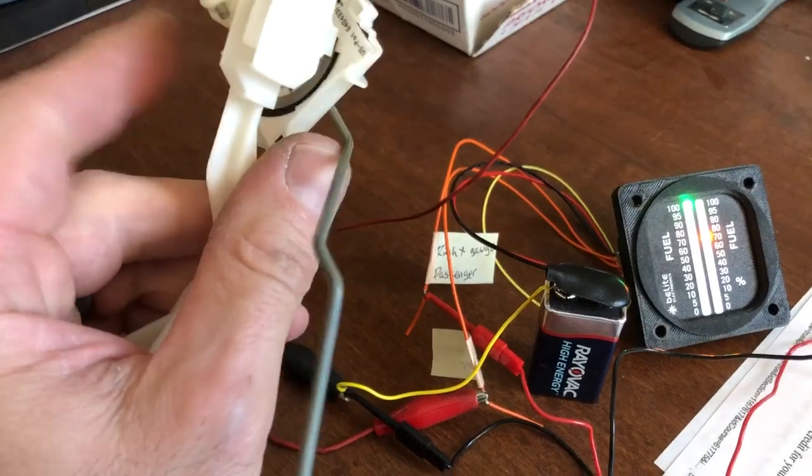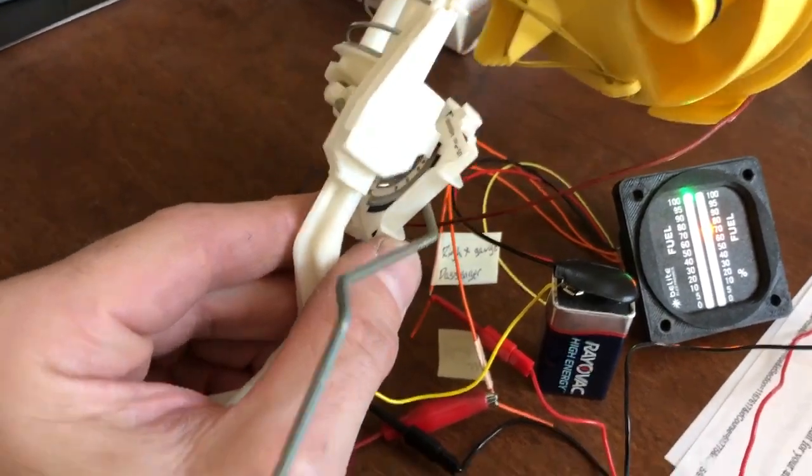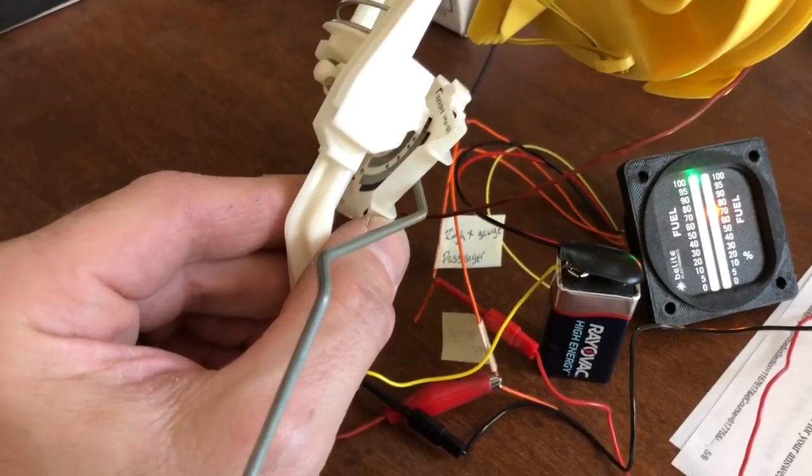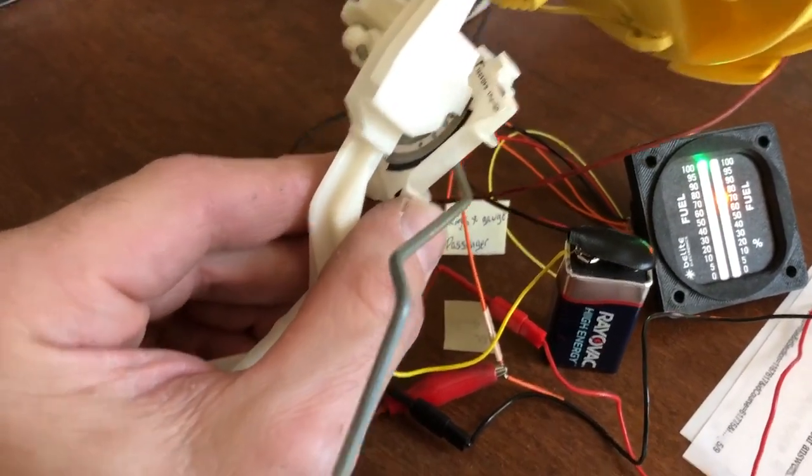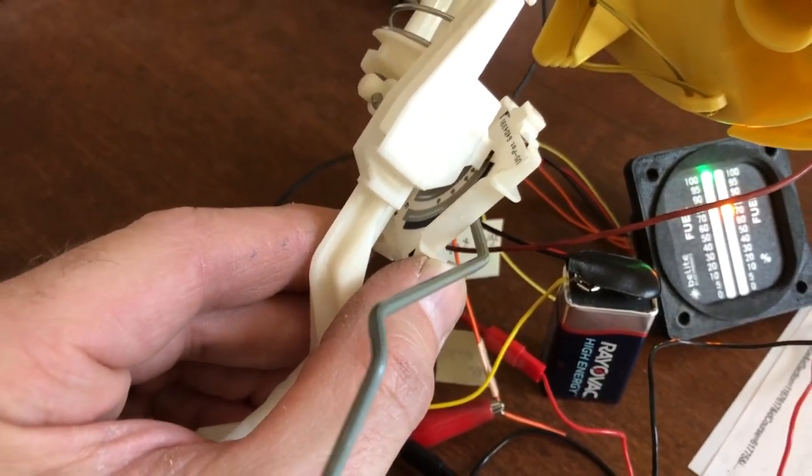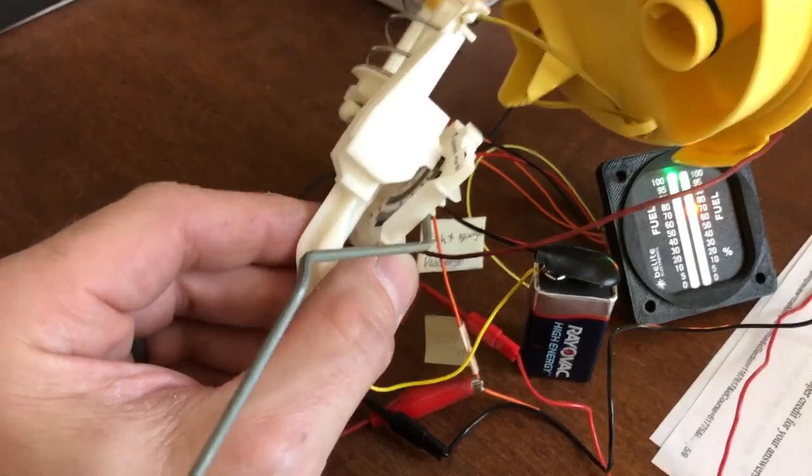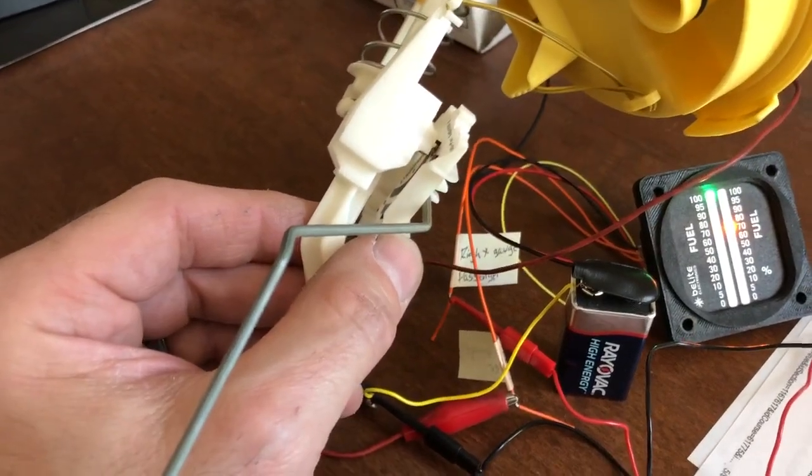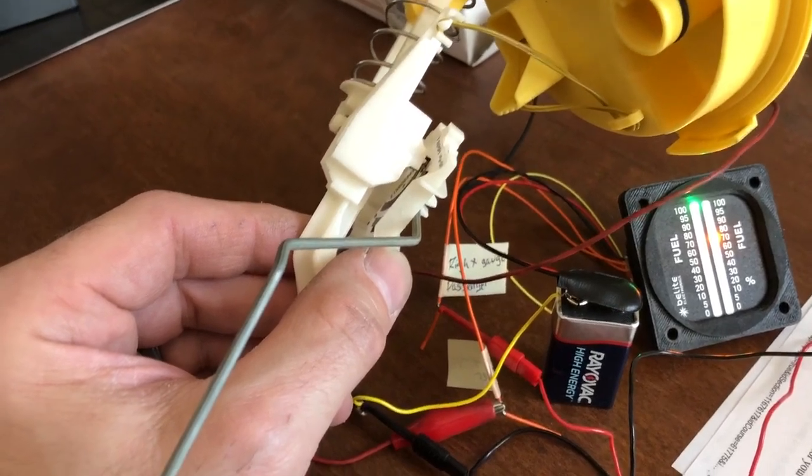The passenger lobe, its fuel sender actually has a reserve setting that is supposed to turn on the light when the fuel gets below a certain point and you can see right there on the resistor that there is a bare area. That bare area has no resistance whatsoever and that's what pegs out the gauge and turns on the reserve light.